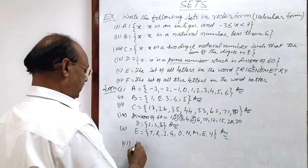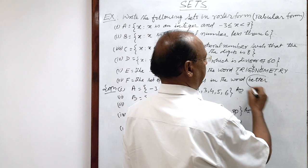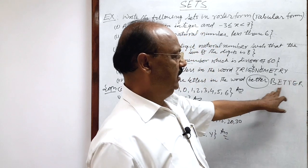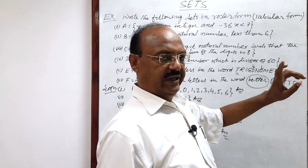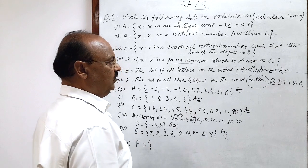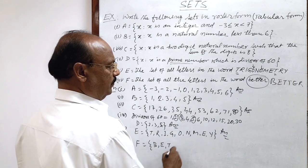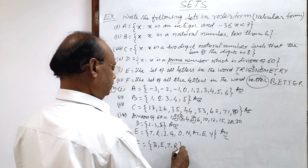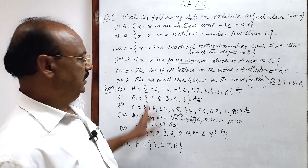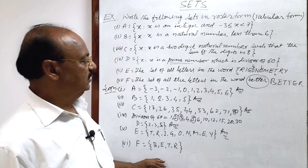And last question here. Sixth, set F, the set of all the letters in the word better. Here what is better: B, E, double T, E, R. So here E is mentioned twice, but we will take only 1 E. Similarly we will take only 1 T. So here the set in tabular form, in roster form, will be B, E, T, and R. These are the elements, these are the objects, these are the members of this set F as per the letters in the word better. So this is very informative.